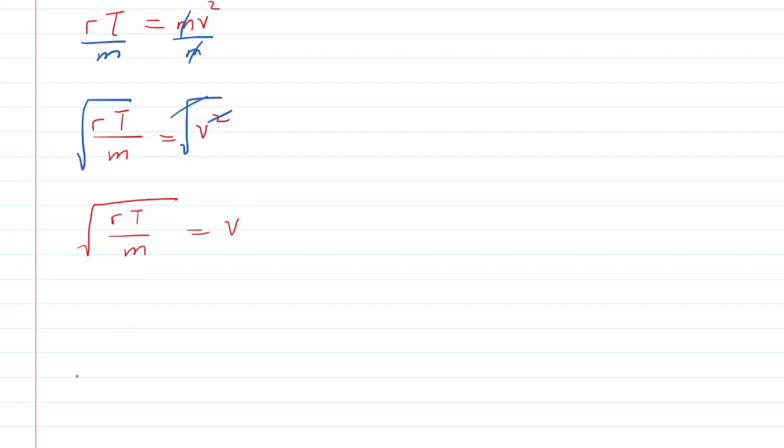There is our expression to solve for the speed. The radius and mass of the puck were both given, as well as the tension we calculated earlier. Let's plug in the values. Notice the radius was given in centimeters - 20 centimeters. We have to multiply that by 10 to the minus 2 to get it into meters. When you do that, you will get 0.2 meters.